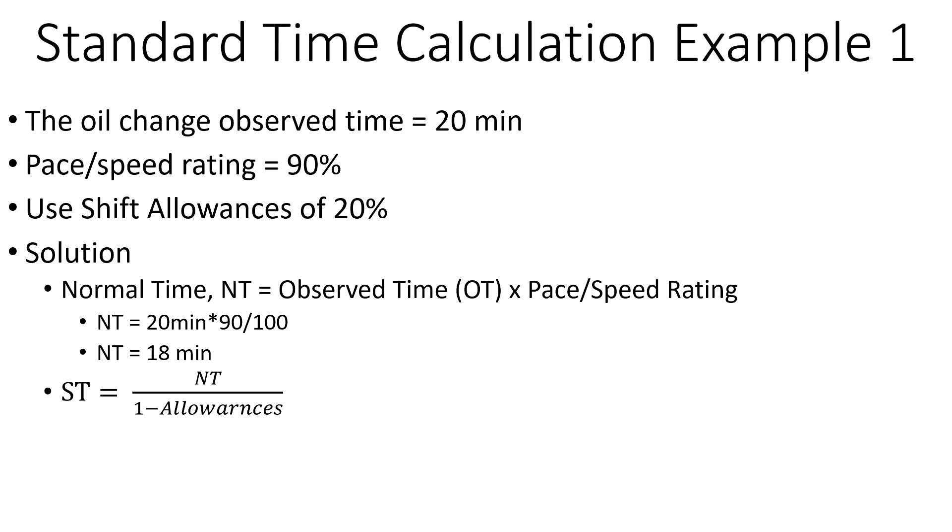And then the standard time—this is the formula for typically unknown processes, so it's kind of safer to use than the other formula, which we'll show in a minute. If you put everything in this formula, we get a standard time of 22.5 minutes. If we use the other formula, this one, you get 21.6 minutes. This is for more familiar processes.